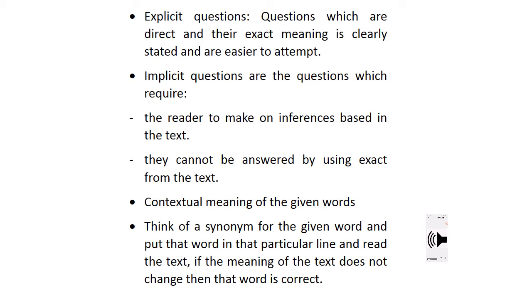The answers to implicit questions are not directly there in the passage, so you have to understand these two categories. When you attempt the exercise questions, it will indicate which are explicit and which are implicit, and you must attempt them accordingly. For contextual meanings, you're going to guess the meaning of the words, think of a synonym, and then put that guessed word or synonym into the line from where it is taken. Then read the line — if the meaning of the text is not changed, it means your guess is correct.